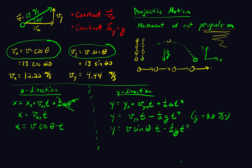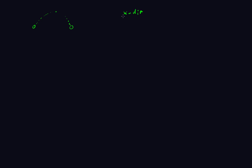So for a projectile, we work in the X direction and then in the Y direction. The thing that ties these together is time — time is the same for both. The time it takes to go up and down is the same time it takes to travel horizontally. So we're typically going to need to solve for time.